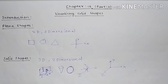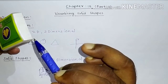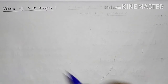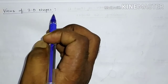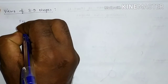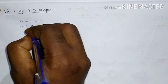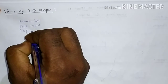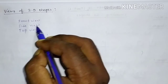Now, views of 3D shapes. How many views does a 3D shape have? Simply, there are three types of views: front view, side view, and top view. There are only three types of views in a solid shape.